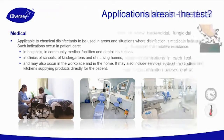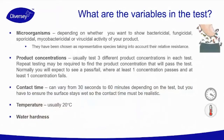What are the variables in the test? We have already talked about the application area — whether it's FD or medical — but there are also other important variables. The first is the microorganism: depending on whether you want to show bactericidal, fungicidal, sporicidal, mycobactericidal, or virucidal activity of your product. There are representative species chosen based on their relative resistance to disinfection, and as a manufacturer we must test against those.